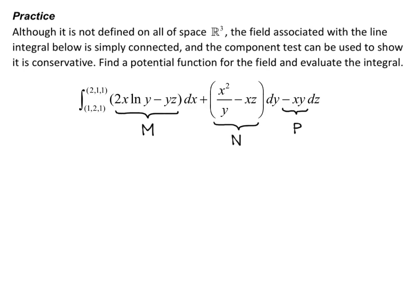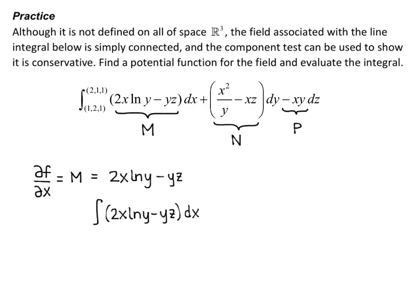We need to find the potential function following the same procedure as in the last video. Partial F partial x equals M, which is 2x natural log of y minus yz. To find the potential function F, I take the antiderivative with respect to x: the integral of 2x natural log of y minus yz dx equals x squared natural log of y minus xyz, plus some function of y and z, which we'll call g of y and z. Because if I took the derivative of that with respect to x, I'd get 0.